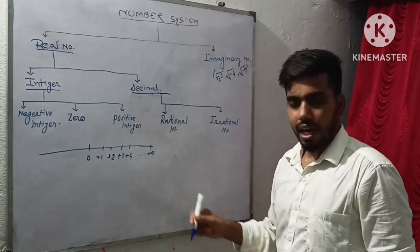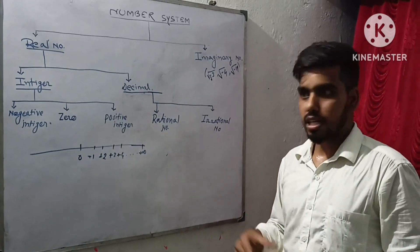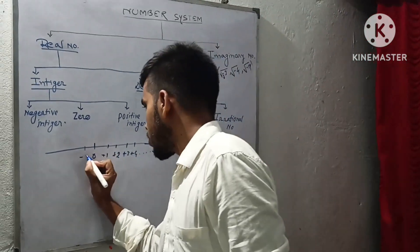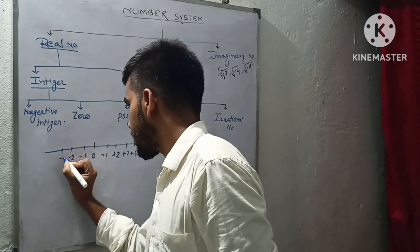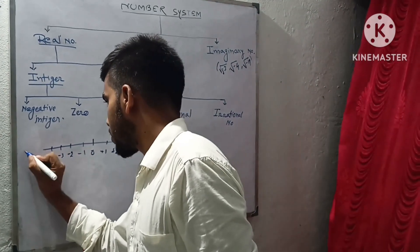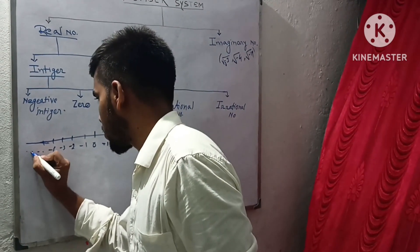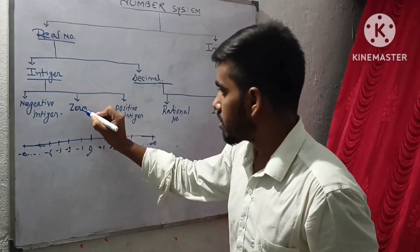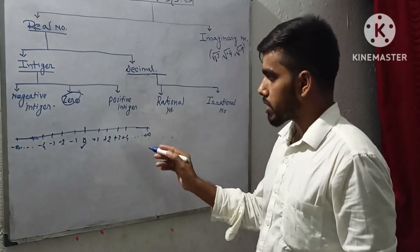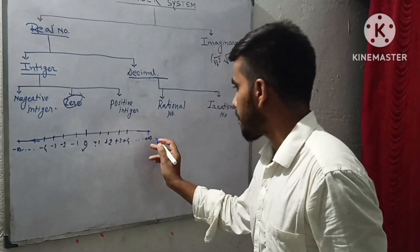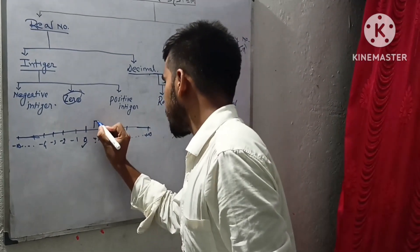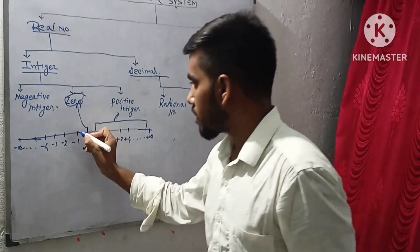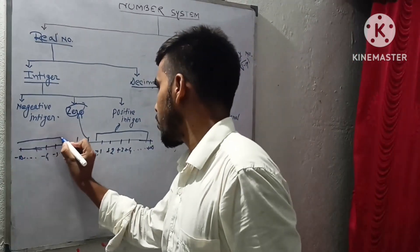We can't imagine the last positive integer number, that's why we use infinity. On the left-hand side of zero we have negative integers: minus one, minus two, minus three, minus four, and so on to minus infinity. So zero and all positive integers from plus one to plus infinity are called positive integers, and all negative numbers from minus one onwards are called negative integers.